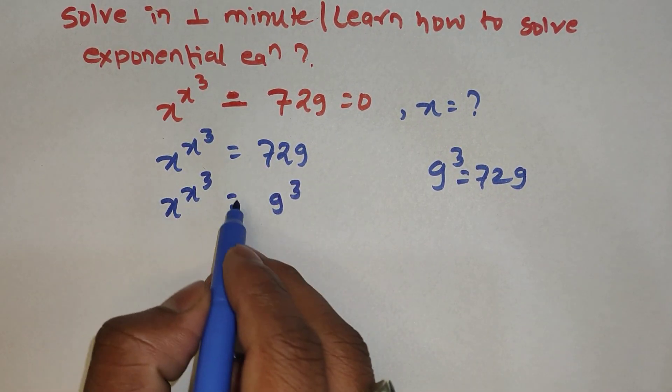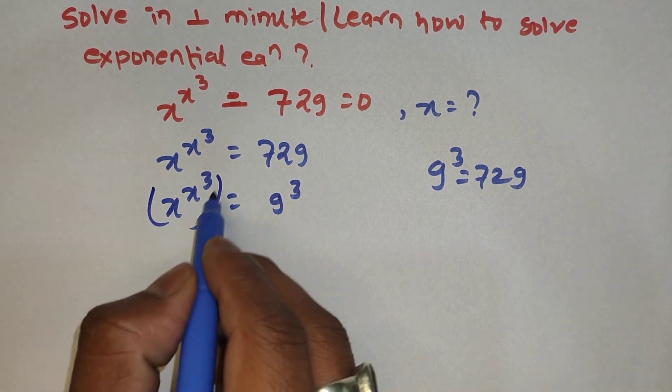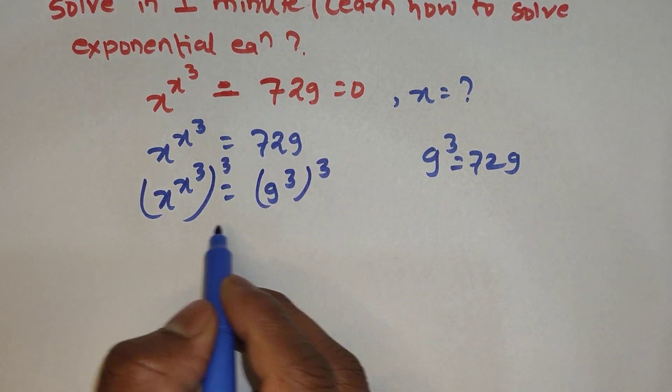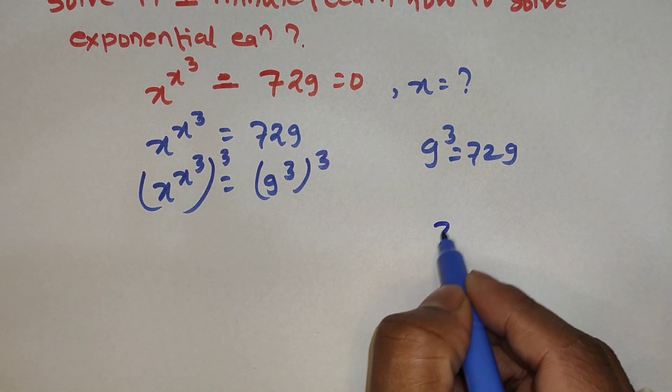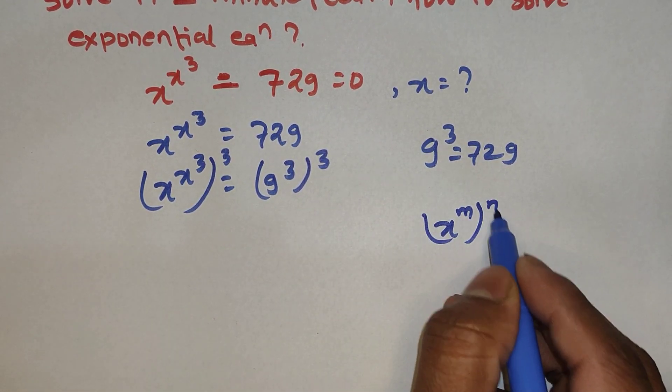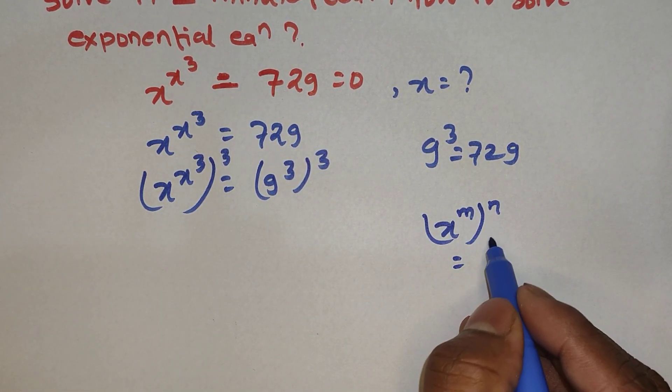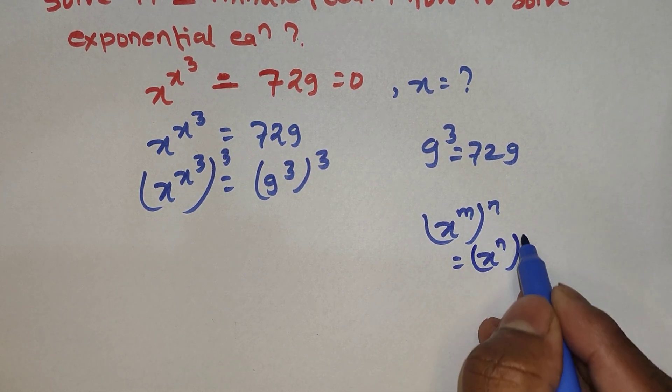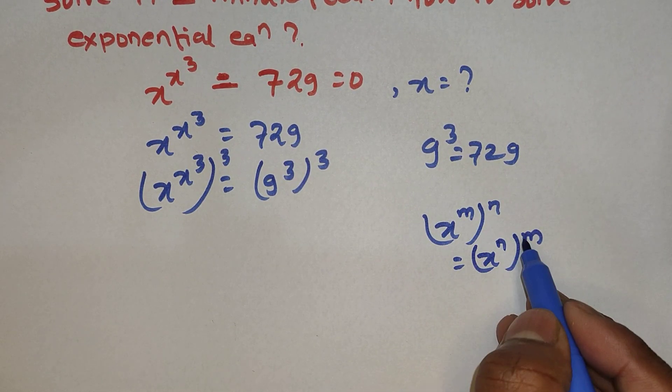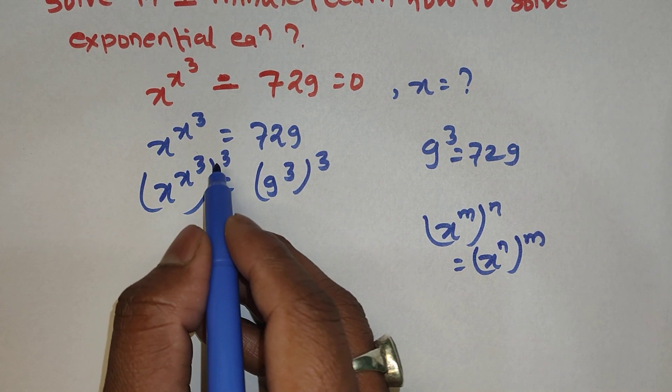After that, we are going to cube both sides - that is, raise to the power 3 on both sides. According to the power rule, x to the power m to the power n can be written as x to the power m times n. Here the exponents can be interchanged.